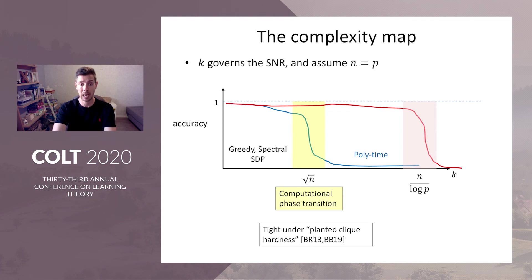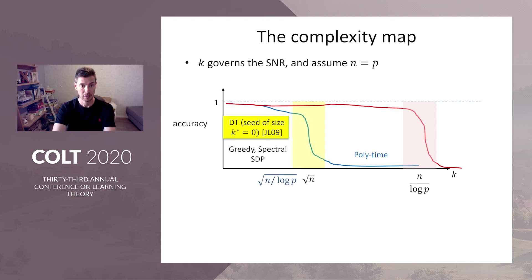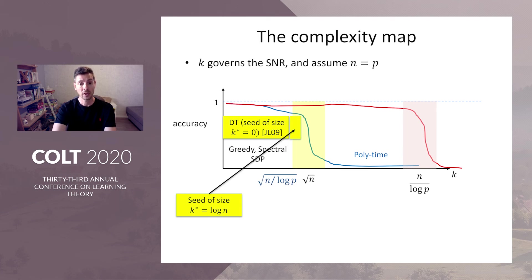Every polynomial time algorithm — for example, diagonal thresholding, covariance thresholding, semi-definite programming — may succeed up to this threshold but not beyond. Indeed, covariance thresholding, a spectral algorithm, succeeds up to the threshold in the spiked covariance model. What's known is that diagonal thresholding, which is SSPCA with no seed, was shown by Johnston and Lou to succeed almost up to the computational threshold. We have shown that a seed of size log n takes you all the way to the computational threshold.